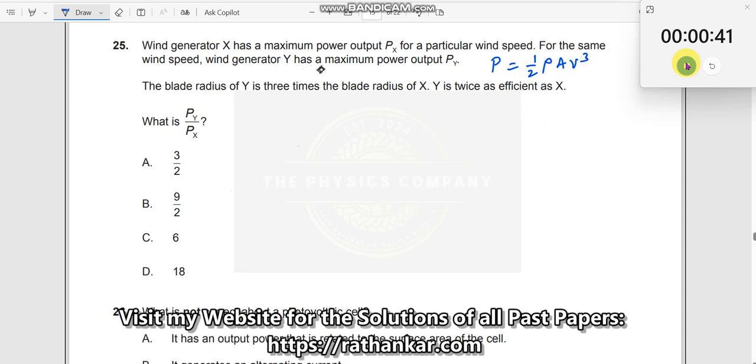For the same wind speed, wind generator Y has a maximum power output PY. The blade radius of Y is equal to 3 times the radius of X, and Y is twice as efficient as X.